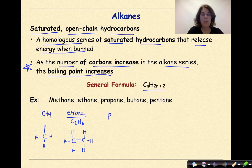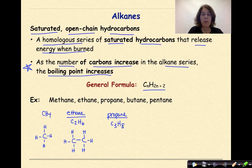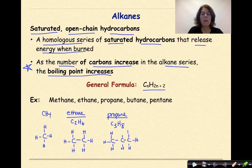Let's go on to propane. Prop means three, so C3H8 — two times three plus two equals eight. We draw three carbons with an ANE ending, single bonds between all three of them, and then we surround them with eight hydrogens.